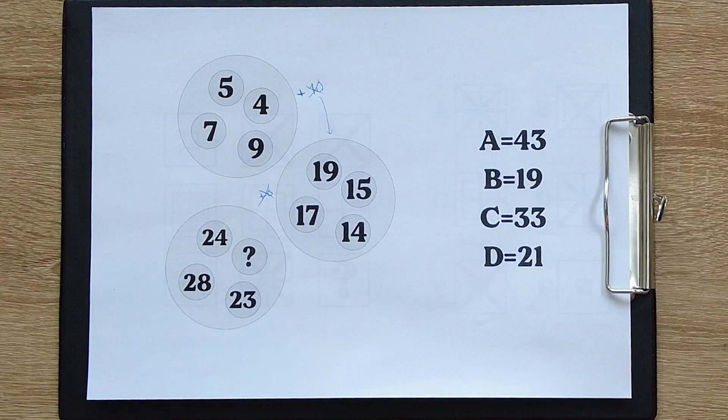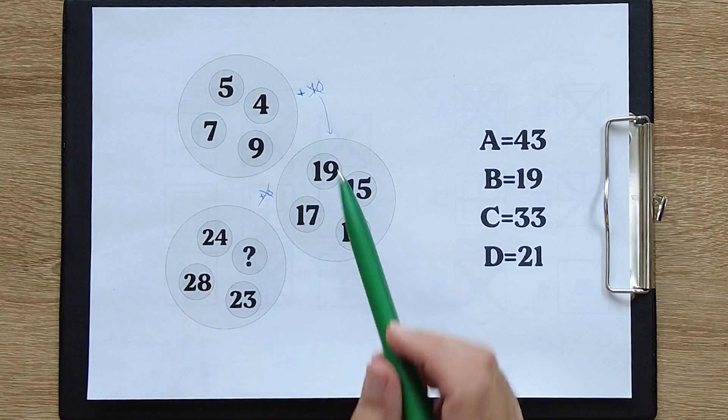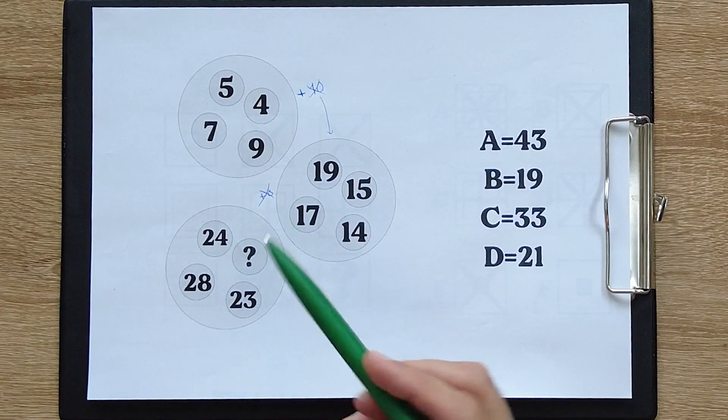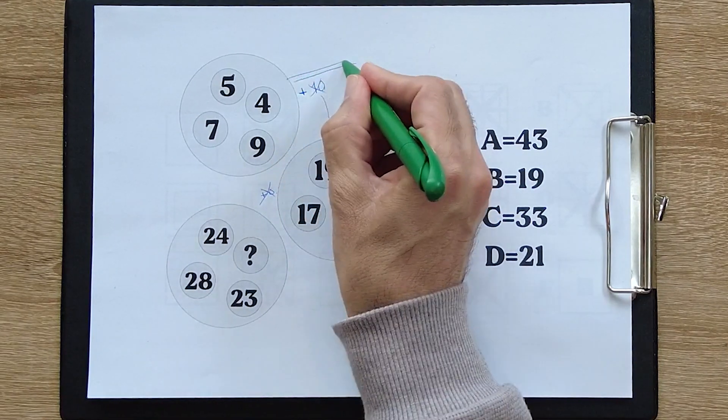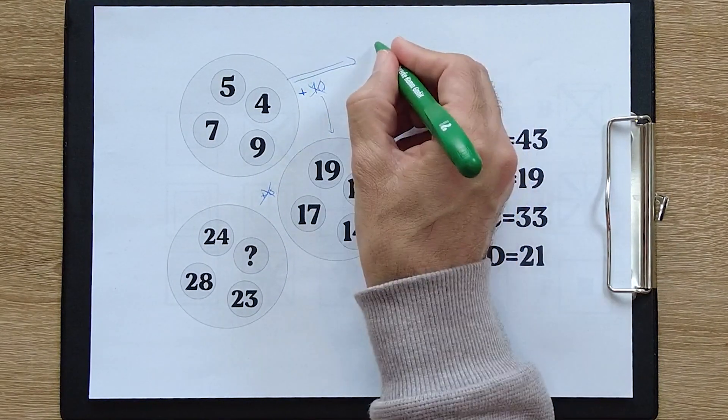We didn't get an answer from the first method. By checking again, we came to the conclusion that each set of numbers is in a specific interval.